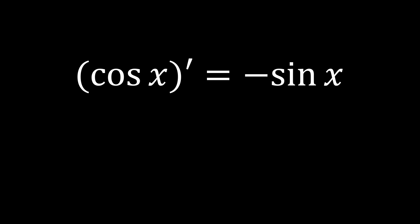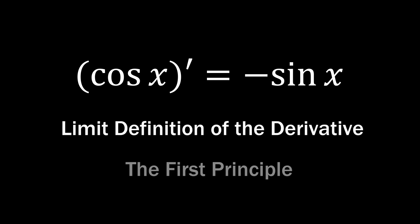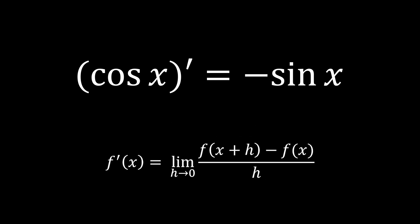In this video, I will explain in detail how the derivative of cosine x becomes negative sine x using the limit definition of derivative, also known as the first principle. We'll use this formula to demonstrate how the derivative of cosine x equals negative sine x. Shall we begin?